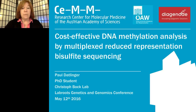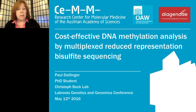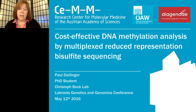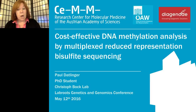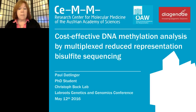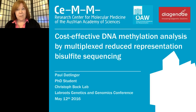Now I'd like to introduce Paul Datlinger. Paul is a PhD student in the lab of Christoph Bock at the Center for Molecular Medicine of the Austrian Academy of Sciences in Vienna, and developer of a high-throughput RRBS protocol available as a kit from Diagenote. He studied molecular biology at the University of Vienna, Manchester, and at Imperial College London. Besides developing new technologies for next-generation sequencing, his research interests revolve around epigenetic modifier networks and epigenome editing by exploiting the CRISPR-Cas9 system.